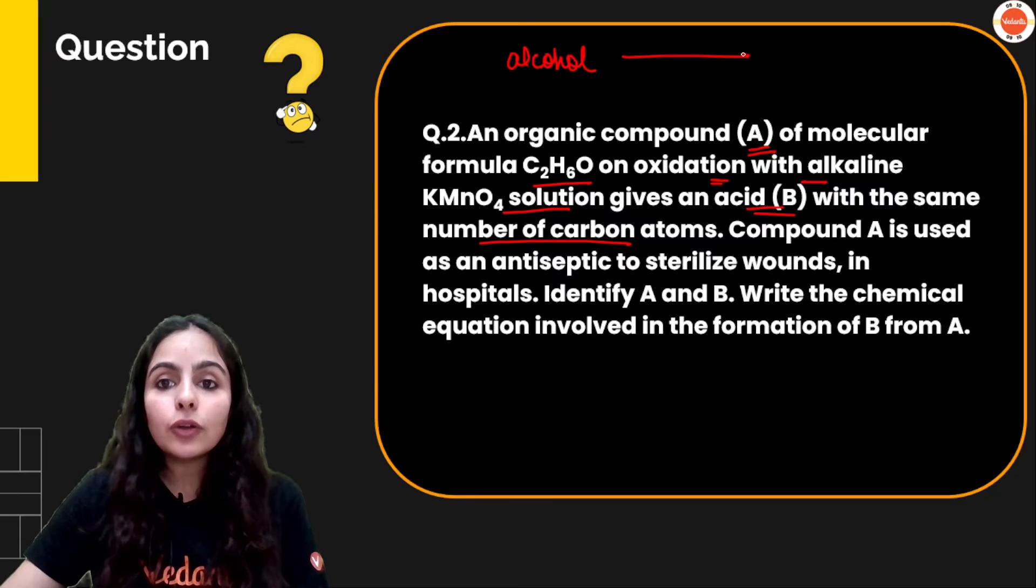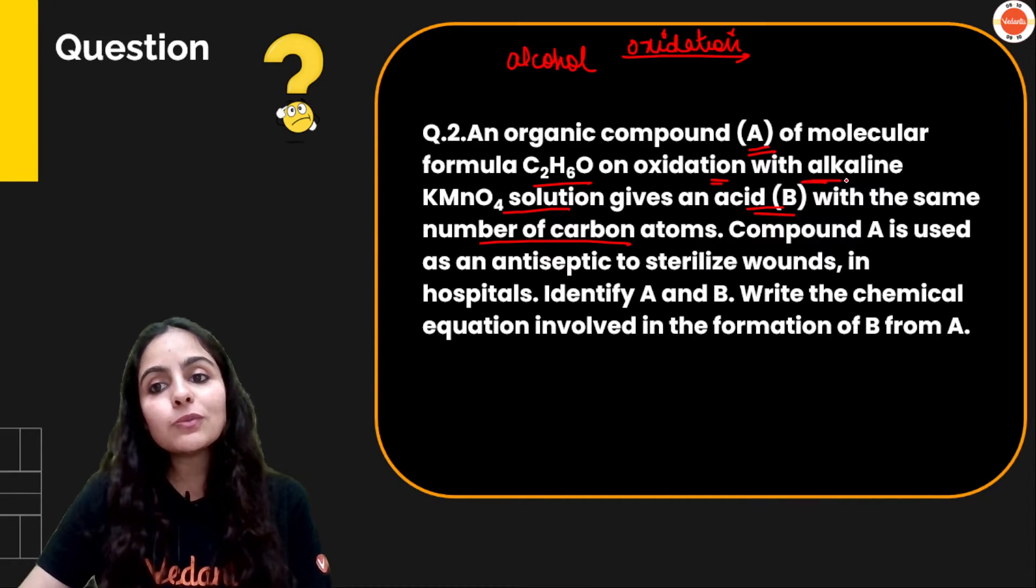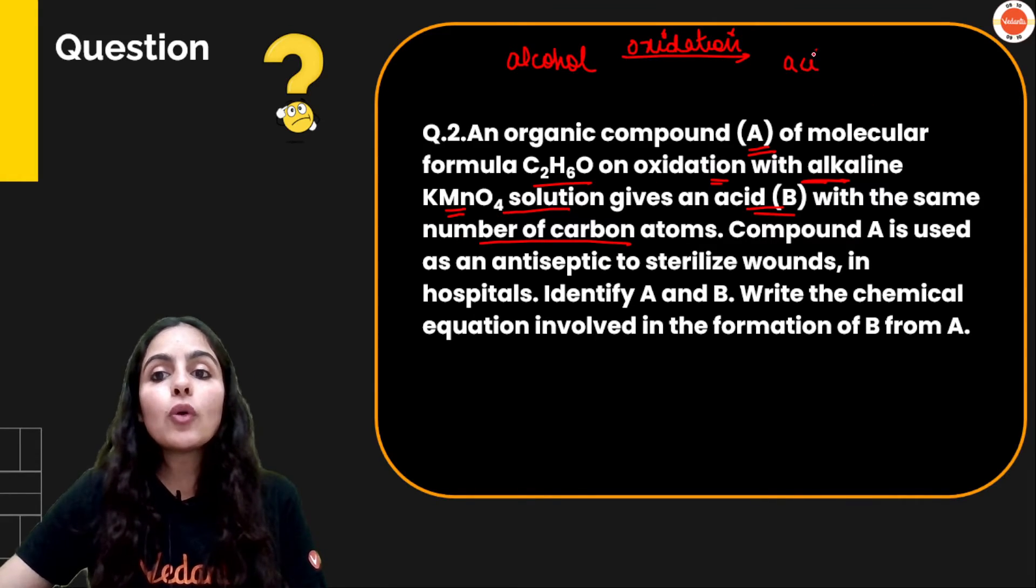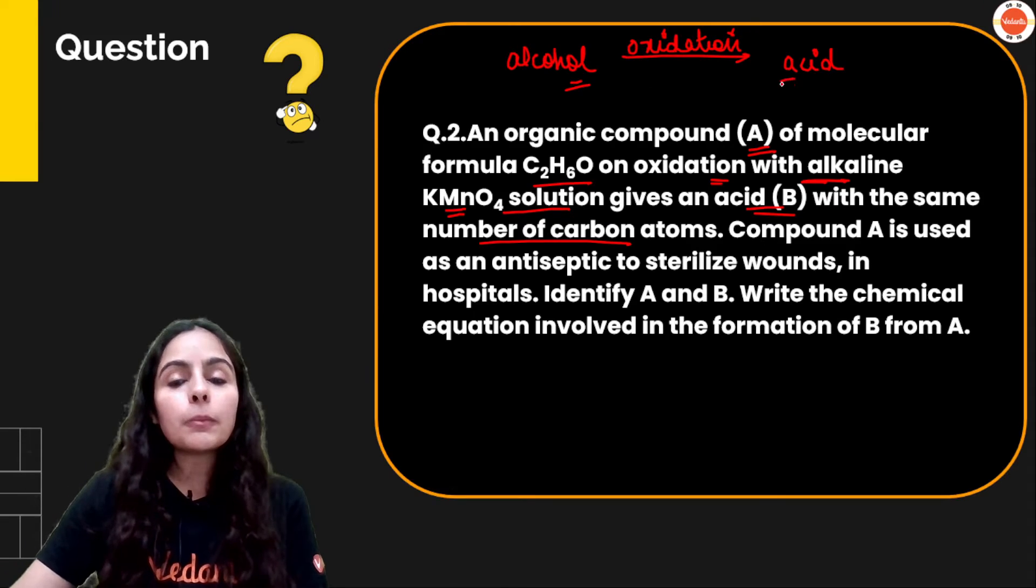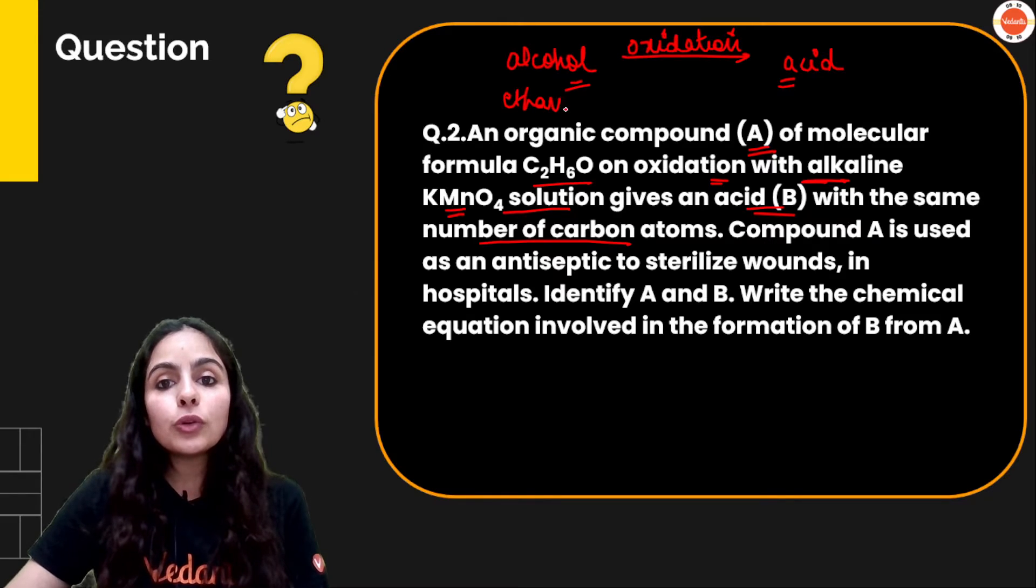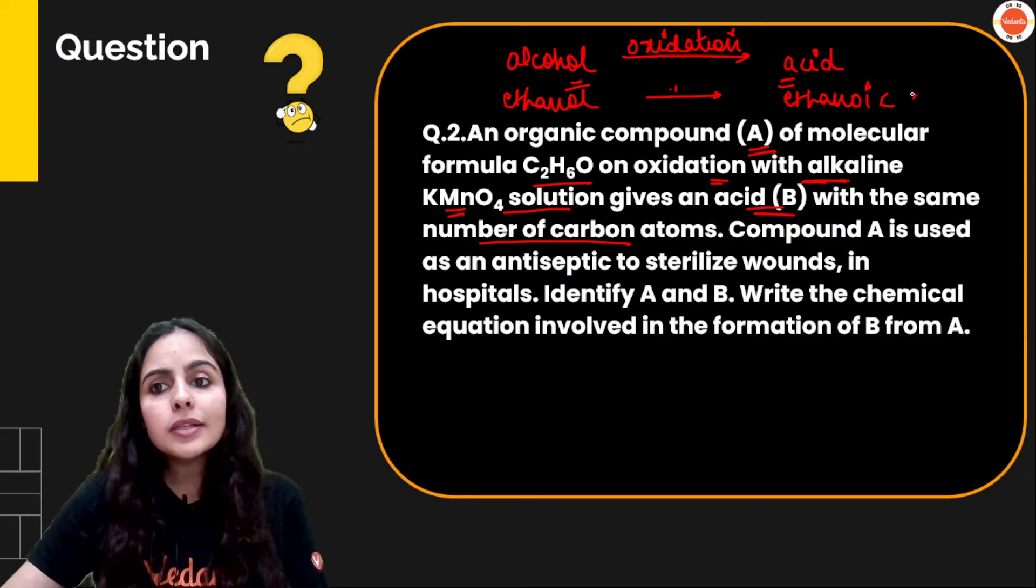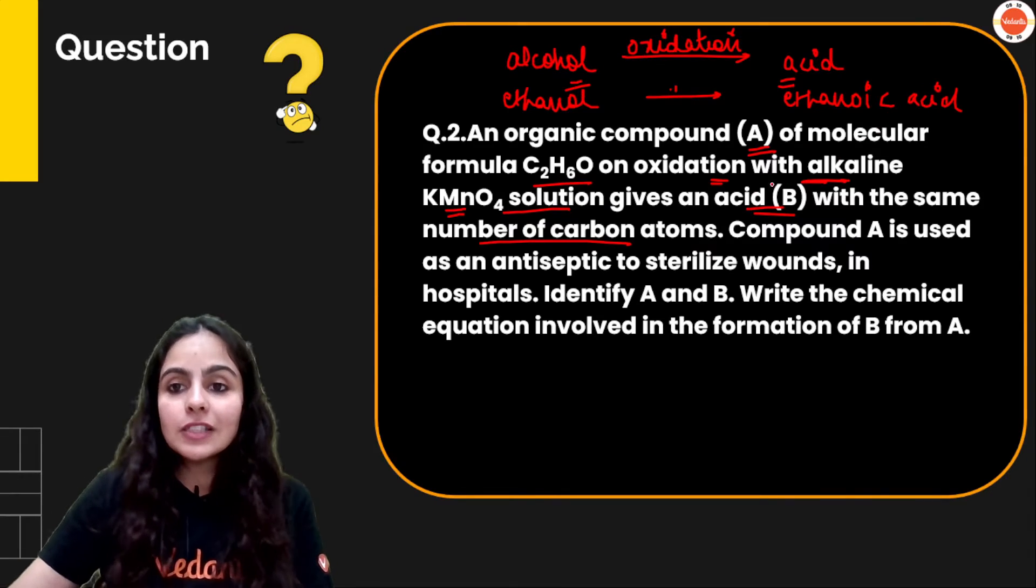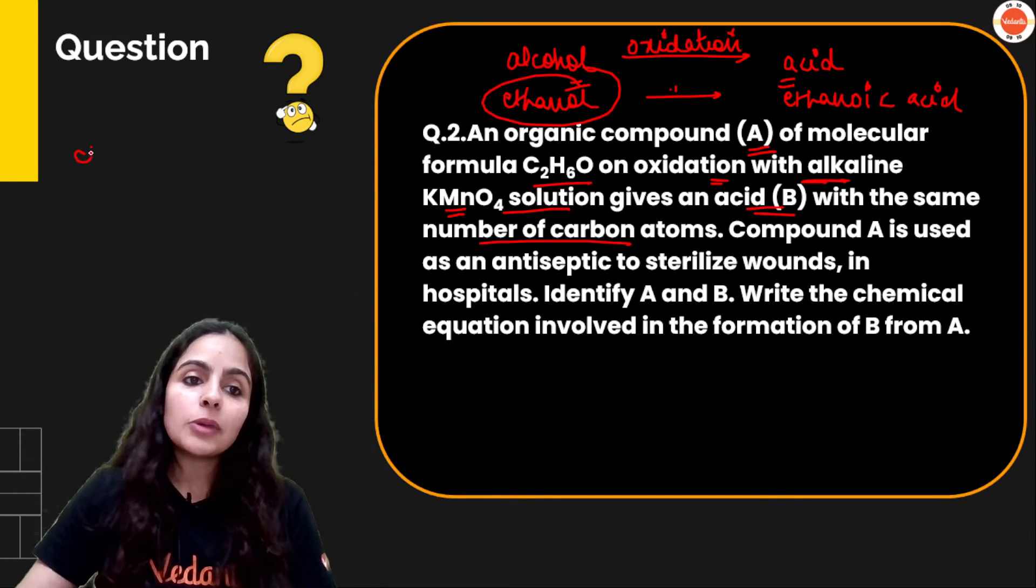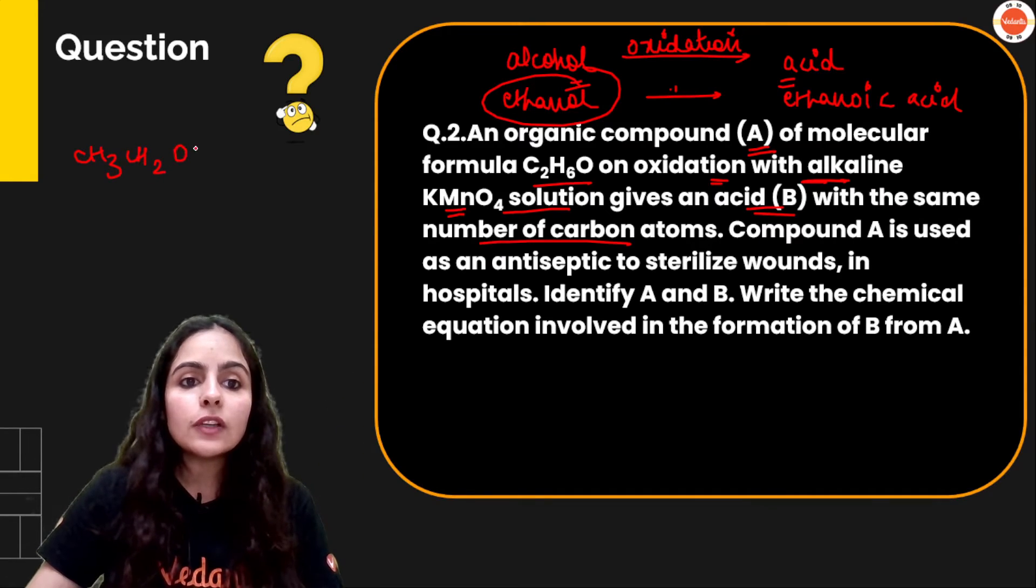Agar aap logo ne chemical properties of carbon compounds bohot acchi se kari hai, toh aap ko acchi se jante ho ki alcohol ka jab hum log oxidation karte hai in presence of alkaline KMnO4 or acidified potassium dichromate, toh wo aapko acid deega. Both sides same number of carbons hote hai. So molecular formula C2H6O, ye follow karo CH3CH2OH.